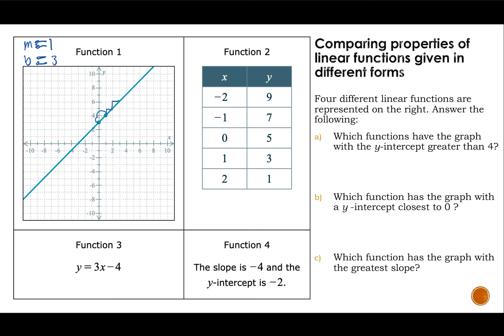For function two, my y-intercept — we always want to look for where x is zero — so b is five. And my slope: taking x1, y1 and x2, y2, I calculate the change in y as three minus five over one minus zero, which gives negative two. For function three, my slope is three and my y-intercept is negative four. For function four, my slope is negative four and my y-intercept is negative two.